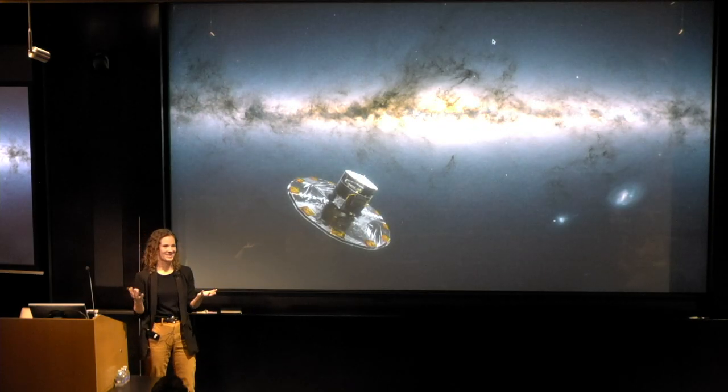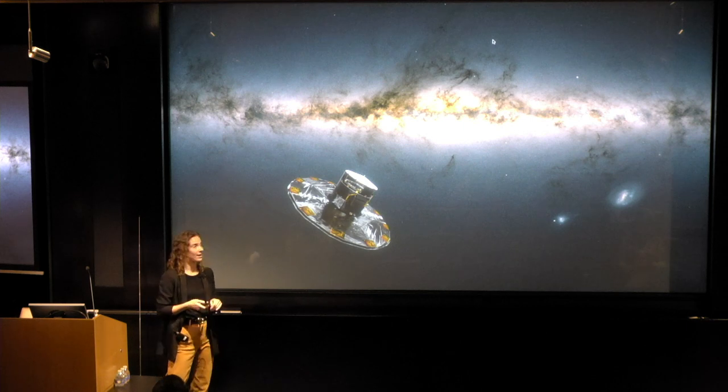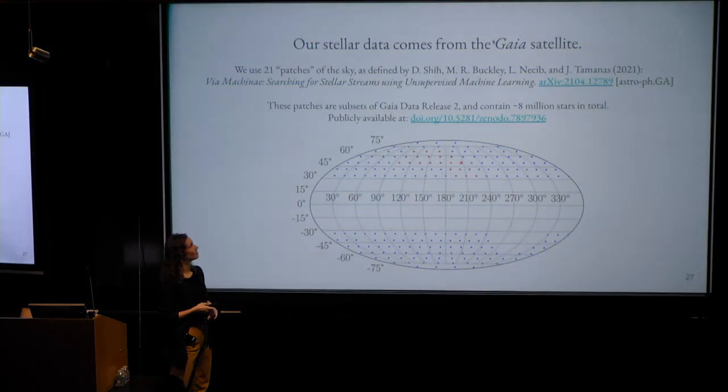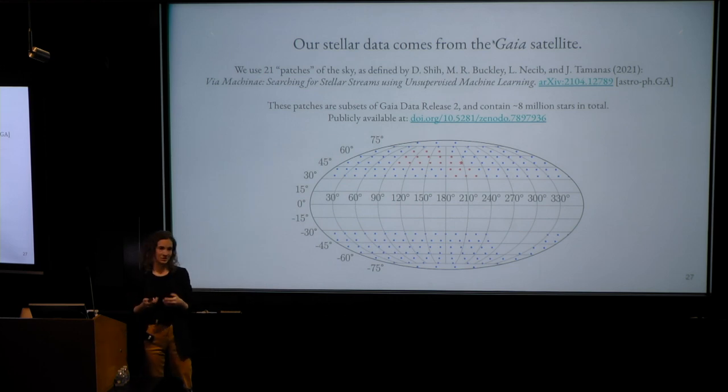A quick aside about what data we're analyzing. The data that we look at is from the Gaia satellite. This is what the satellite looks like. We're specifically looking at 21 patches of the sky. They contain about 8 million stars in total.